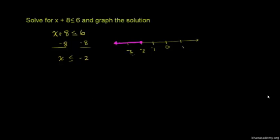You could just sample a few values and verify for yourself that they work. Negative 3 should work: negative 3 plus 8 is 5, which is definitely less than 6 — so that works. And negative 1 shouldn't work; it's not included in this set. Negative 1 plus 8 is 7, which is definitely not less than 6. So just sampling some points, it seems like we've got the right solution.